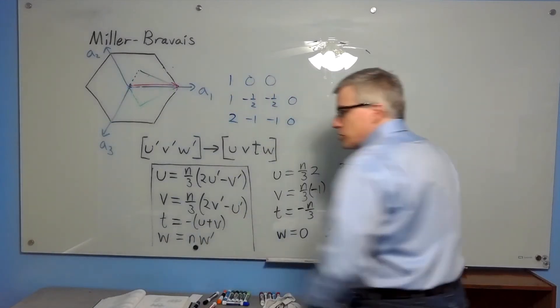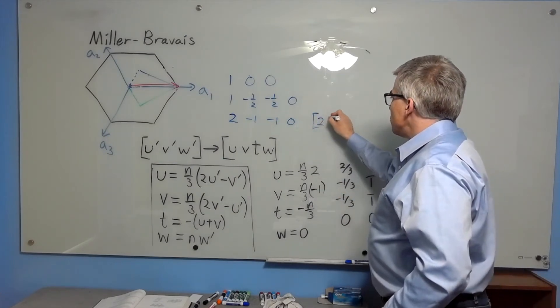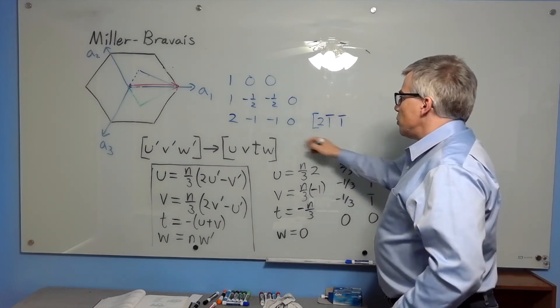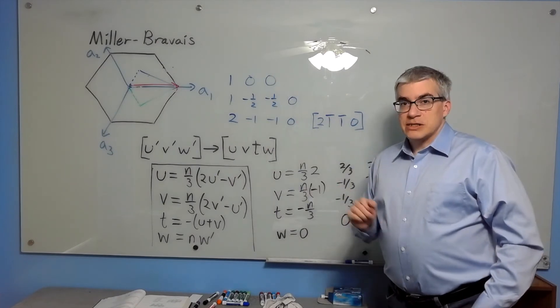And the way we write directions in crystals, we want it super compact. So we write 2, we write the negative 1 as a 1 with an over bar, and another negative 1 with an over bar, and then a 0. So that is the code for that direction in a hexagonal crystal.